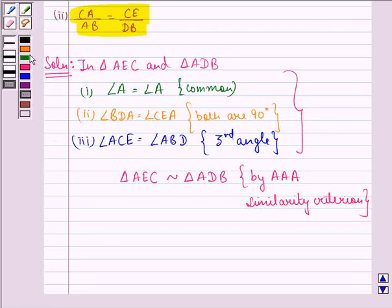Now we need to prove the second part, that means we need to prove that CA by AB is equal to CE by DB. Now in these two triangles we see that CA by AB will be equal to CE by DB.